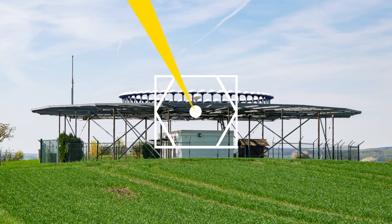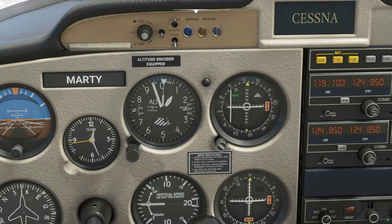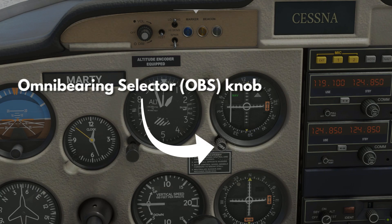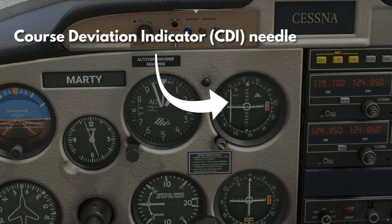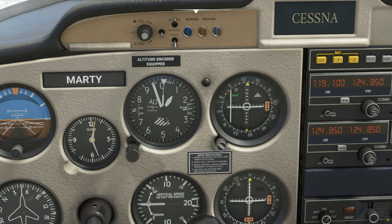Our main concern here is how to use the VOR on your end. Your VOR indicator has four main parts: the course index, the omnibearing selector knob or OBS, the course deviation indicator needle or CDI, and the to/from flag. You may pause the video to familiarize yourself with this.